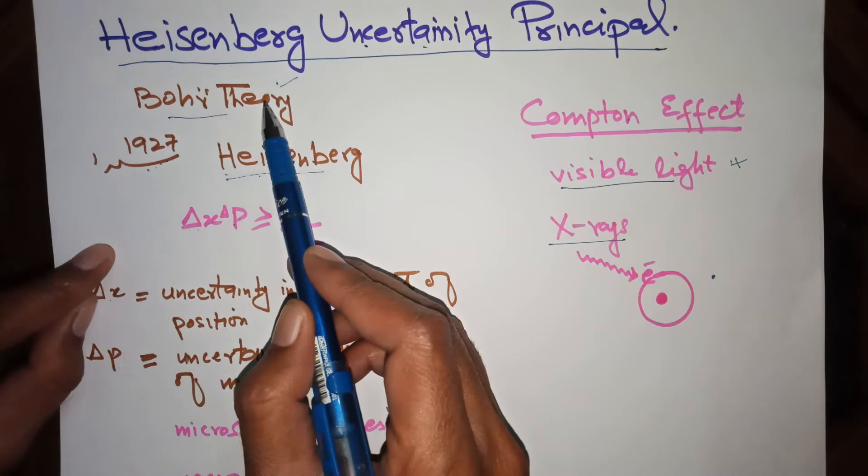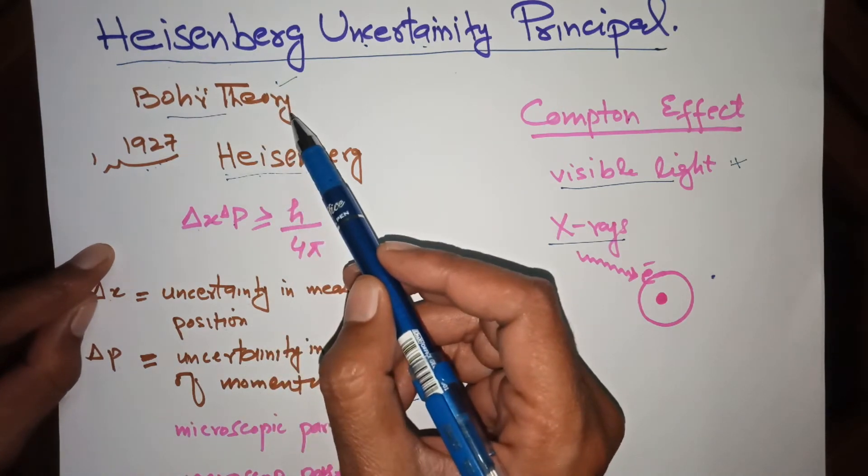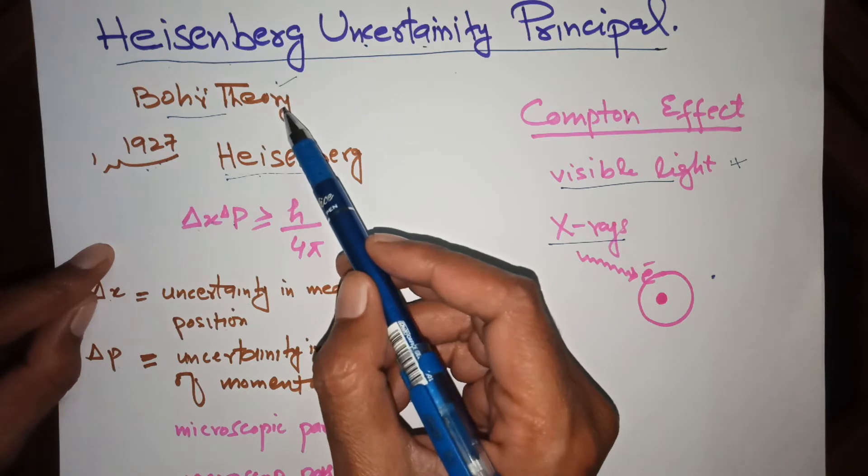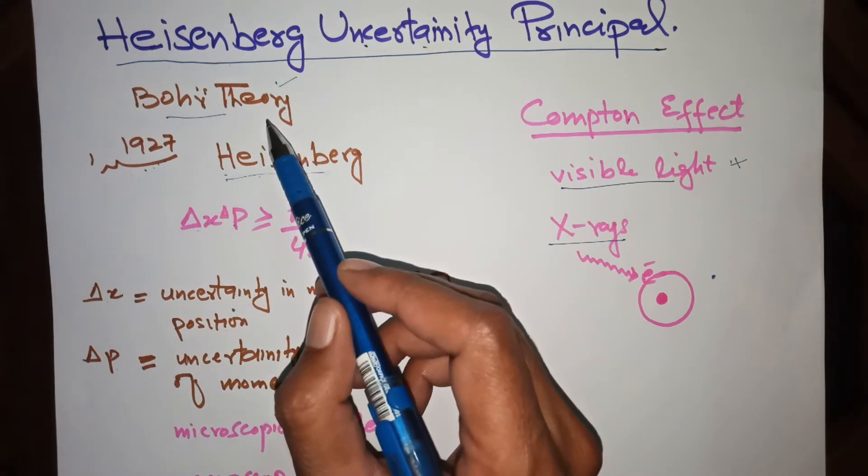According to Bohr theory, if we consider the electron as a wave and as a particle, we can find the position and the momentum of electron accurately.